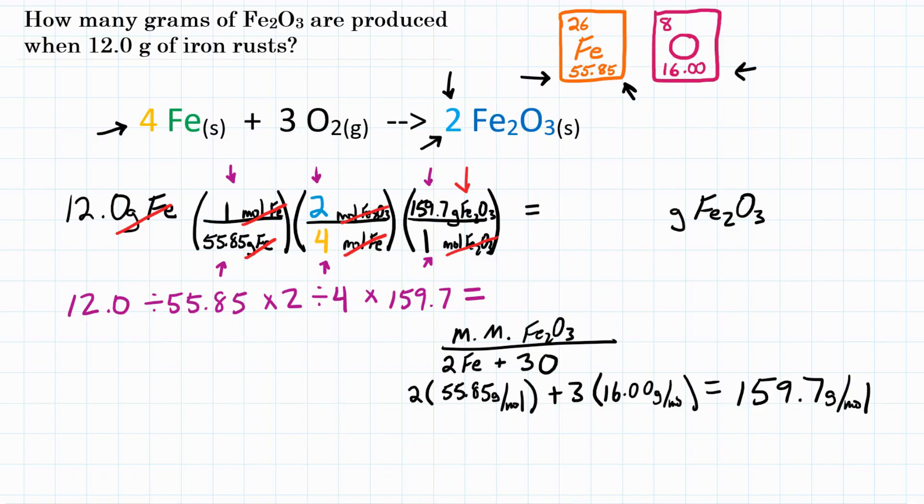And we should get about 17.15, which we're going to round to 17.2 grams. So final answer, 12 grams of iron rusting in the following equation will produce 17.2 grams of Fe2O3.